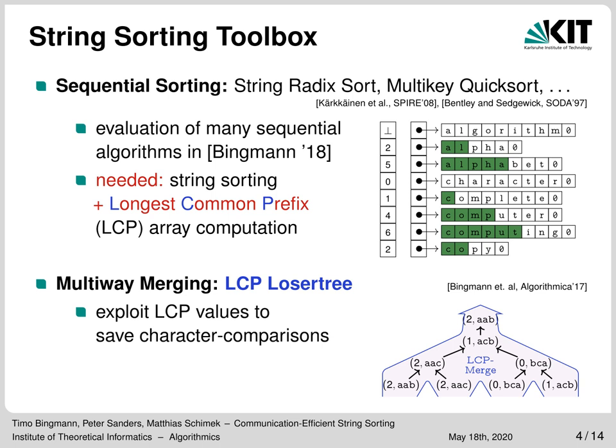So what are the tools in our toolbox for string sorting? There are quite a number of sequential sorting algorithms for strings: radix sort, multi-key quicksort, and many variations of these. In my PhD dissertation you can find an exhaustive evaluation of the fastest sequential string sorting algorithms and in the context of this paper we just use the best from that collection. However, for improving communication efficiency we also needed the LCP array. The LCP array stores the lengths of the longest common prefix of two consecutive entries in the sorted string array. Because it is calculated anyway while sorting, we adapted the existing algorithms to also save this information in an array at basically zero extra cost. When the LCP values of two or more sorted string sets are known, the merging of these sorted sets can be accelerated using the LCP values. For this we previously developed the LCP loser tree or LCP-aware multiway merge algorithm which you can find in the Algorithmica article.